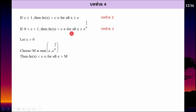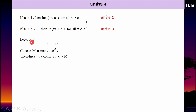บทช่วยสรุป: ถ้า epsilon มากกว่าหรือเท่ากับ 1 log x น้อยกว่า epsilon·x ทุกค่า x มากกว่า e ถ้า epsilon มีค่าระหว่าง 0 กับ 1 log x น้อยกว่า epsilon·x ทุกค่า x มากกว่า e^(1/epsilon). So, log x is less than epsilon·x.